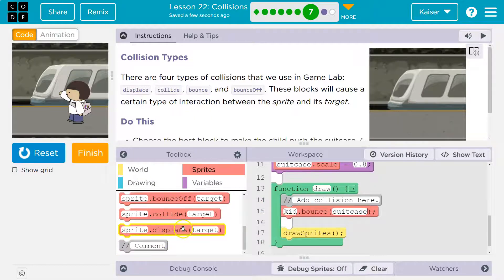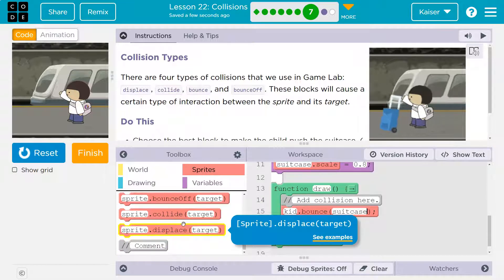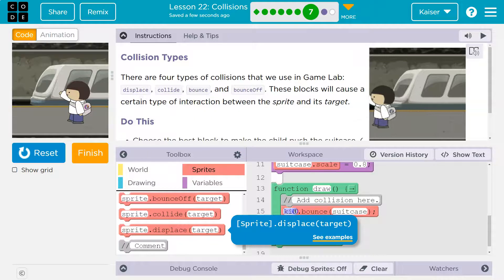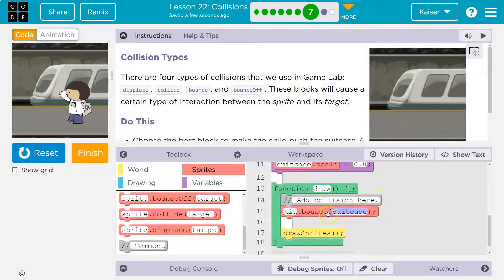The draw loop runs 30 times a second. Keep in mind there's a hidden conditional, and what I mean by that is a hidden if statement inside each of these. So inside of bounce, bounce off, collide, and displace, what the if statement is: if our child sprite is touching the suitcase, then it does an action. So this method has a hidden if. This bounce method has a hidden if statement that's saying, 'Hey, are they touching?'